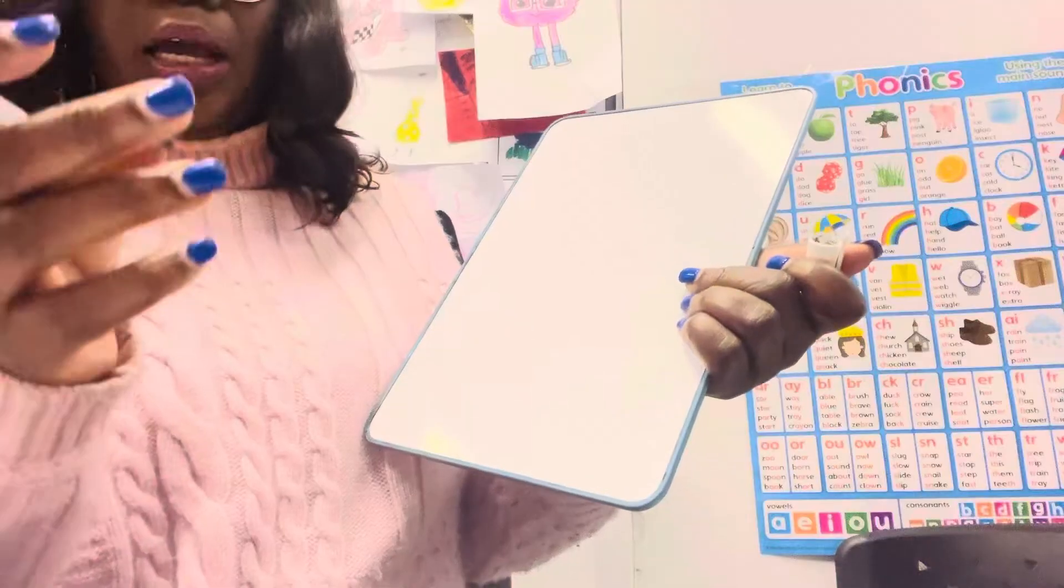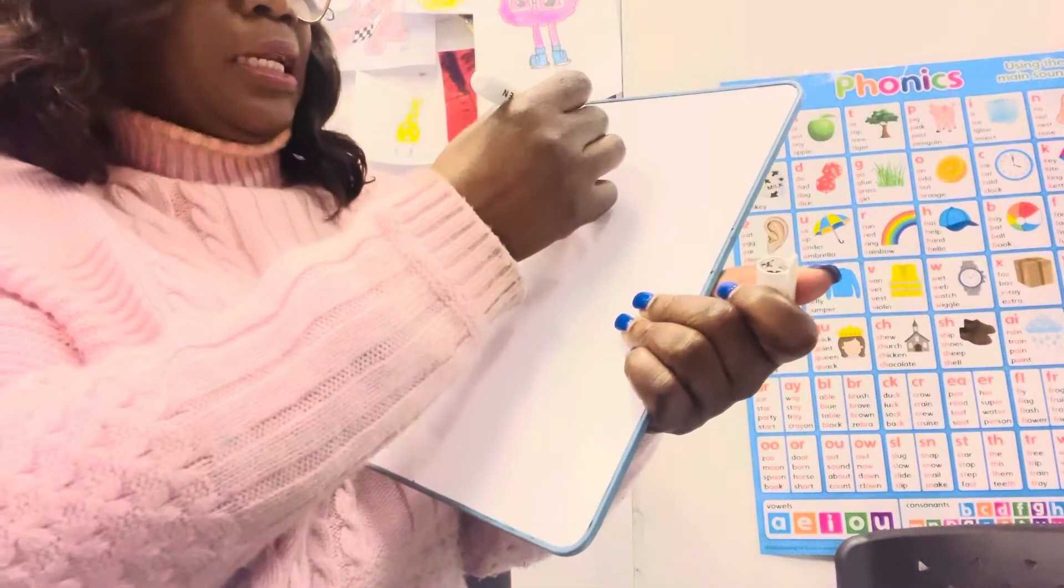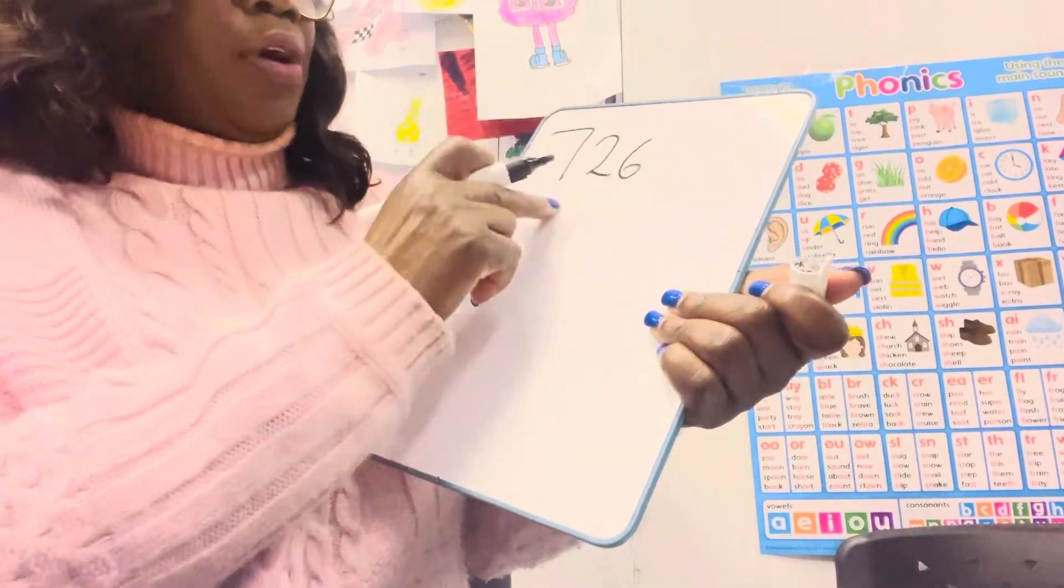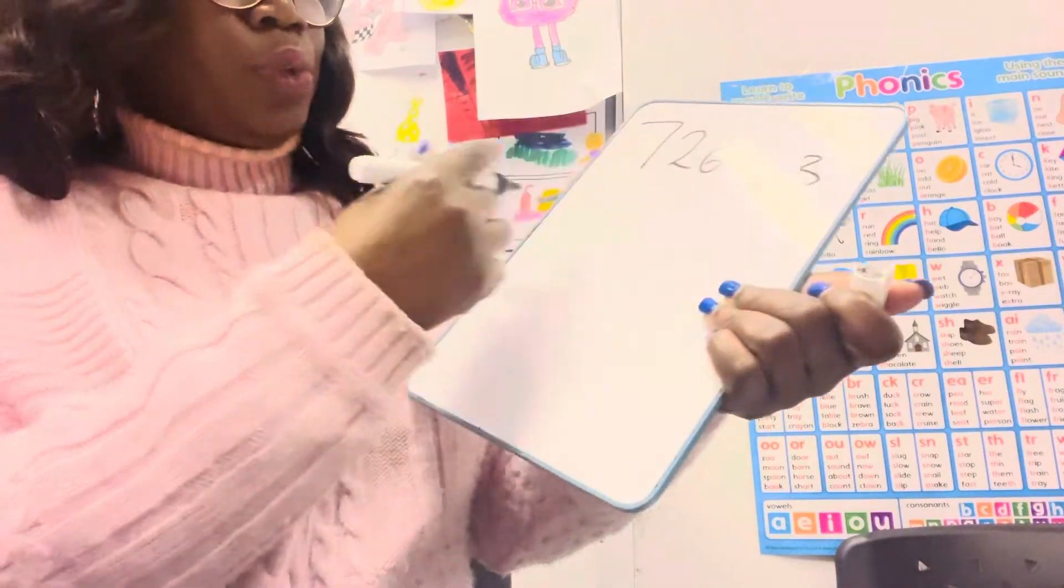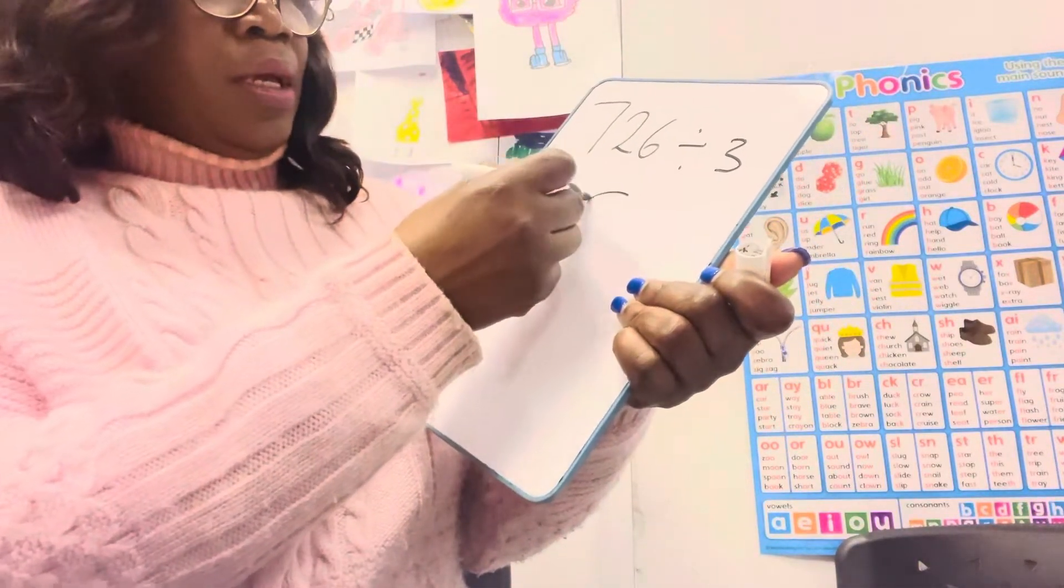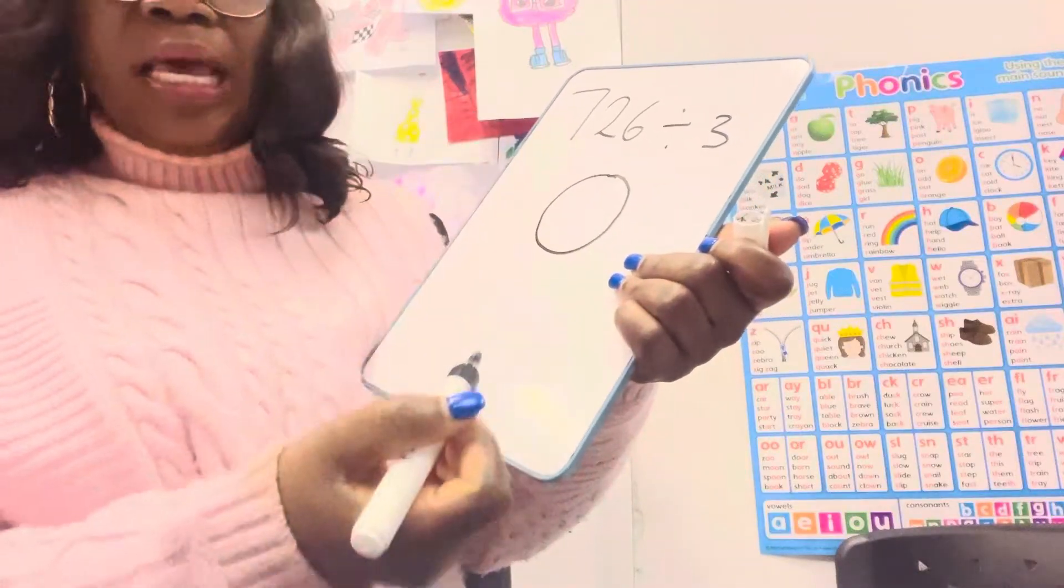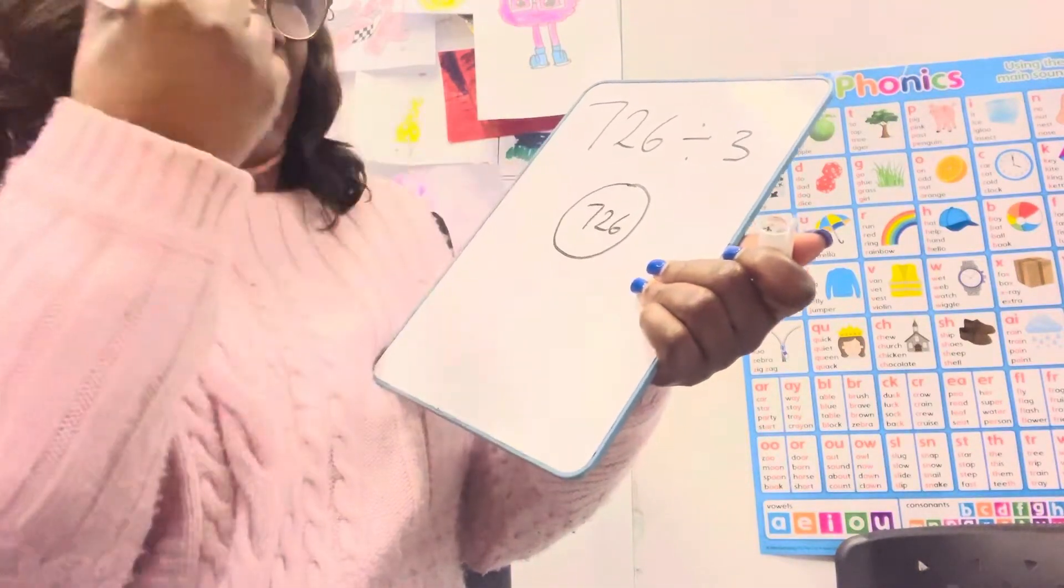So the second one, three digits: let's say we want to use 726 divided by 3. We'll do the same. We make a circle, we draw a circle, we write 726.